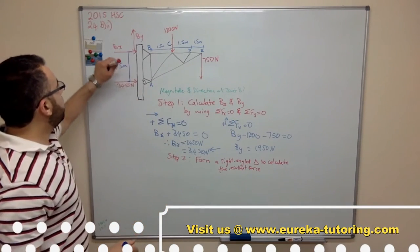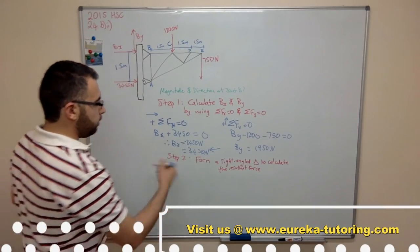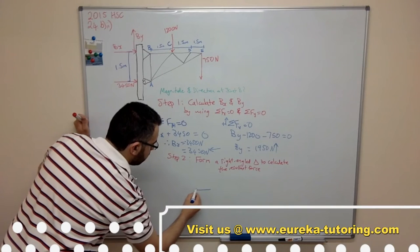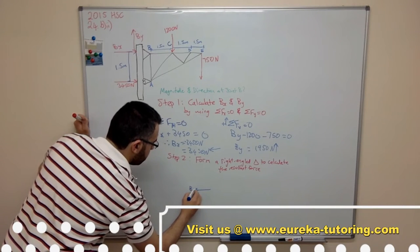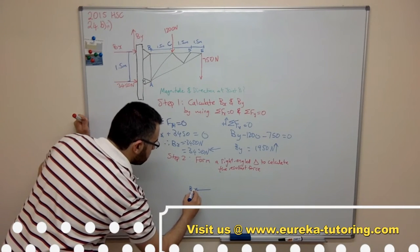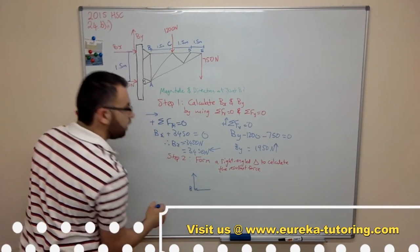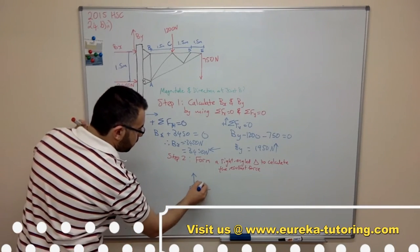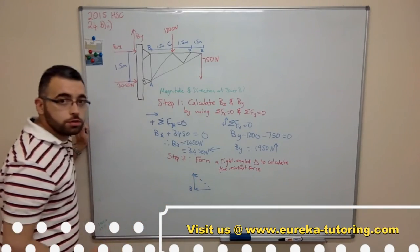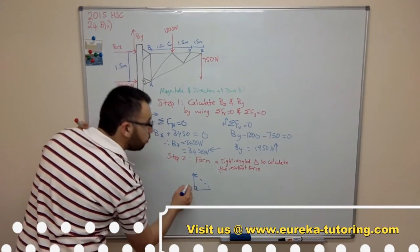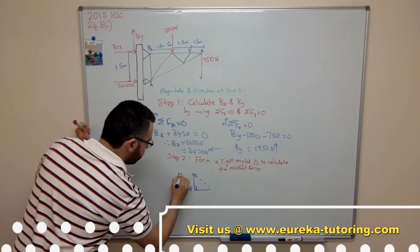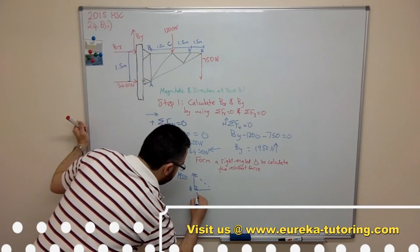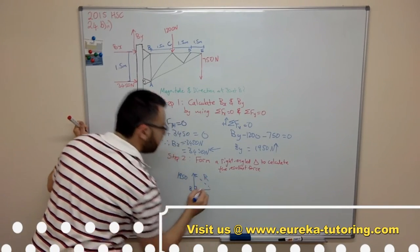So I know that Bx is going this way. This is the pin joint B. And this will be By going this direction. Bx going that right direction. So this will be my resultant force. This is my right angle. Bx is 3450 and this is my R.